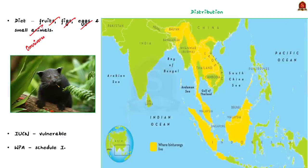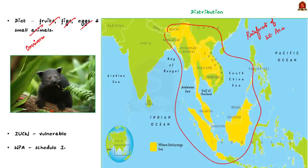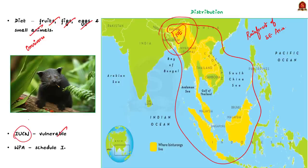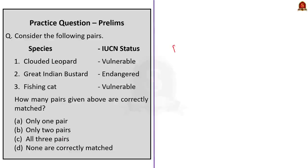Moving on to habitat and distribution: binturongs live in the rainforests of Southeast Asia. They are also found in India, majorly in Northeastern India. Importantly, binturong is listed as vulnerable in the IUCN Red List. As far as the Wildlife Protection Act 1972 is concerned, it is categorized under Schedule 1. That concludes the discussion on binturong — we saw its characteristics, habitat and distribution, and conservation status.